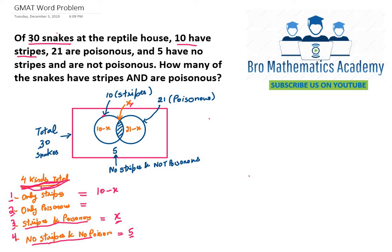How many snakes are only poisonous — exclusively poisonous with no stripes? It is given that 21 are poisonous, but those 21 will also include some snakes which have stripes, which we have assumed to be X. So the only poisonous will be 21 minus X.